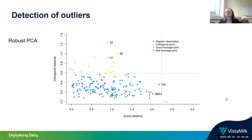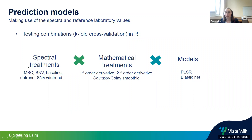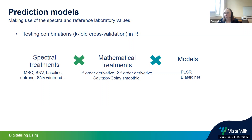Having the spectra and reference laboratory values, I tested different combinations in a k-fold cross-validation approach. I tested different spectral treatments — multiplicative scatter correction, standard normal variate, baseline, trend, and combinations — as well as different mathematical treatments: first-order derivative, second-order derivative, and Savitzky-Golay smoothing to remove noise. I also used two model types: partial least squares regression, which is the gold standard in forage quality analysis, and elastic net, which combines ridge regression and LASSO.